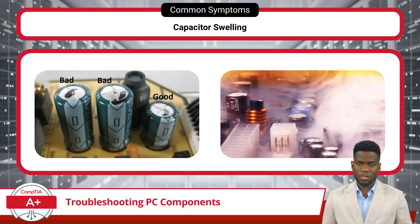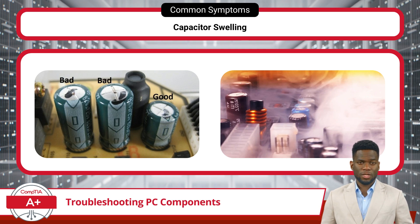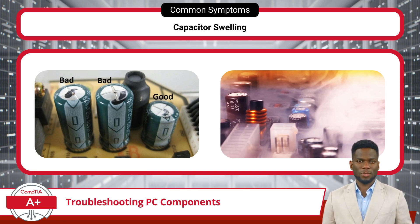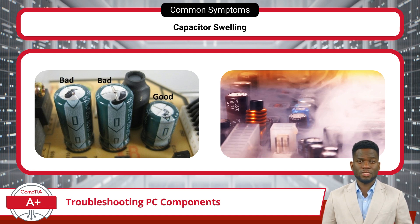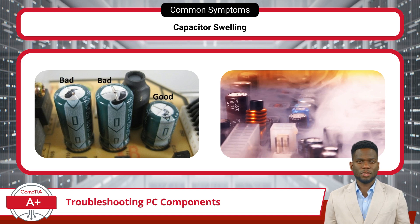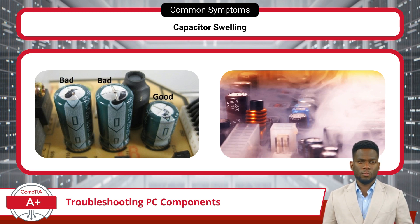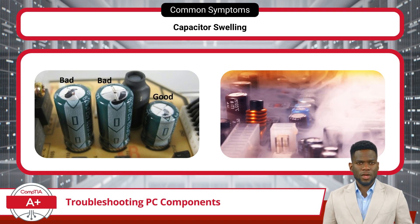Capacitors are essential electronic components found on computer motherboards and other circuit boards, tasked with storing and releasing electrical energy. They serve various functions, including stabilizing voltage levels and regulating current flow. When a capacitor becomes swollen or bulging, it signifies capacitor swelling, which often indicates impending component failure. This swelling occurs due to internal pressure buildup from excessive heat, prolonged usage, or manufacturing defects. It can disrupt the electrical circuitry of the motherboard, leading to system instability, erratic behavior, or complete system failure. In severe cases, swollen capacitors can leak electrolytic fluid, emitting smoke and a distinct burning smell.